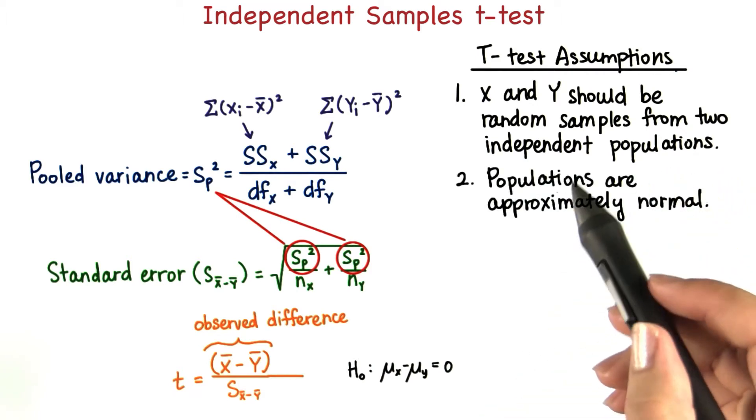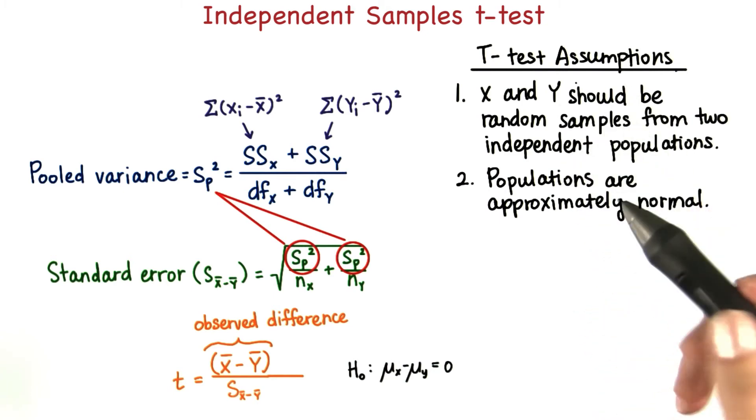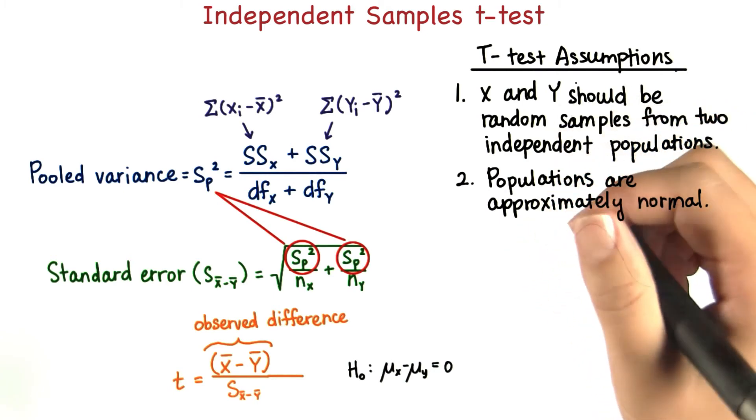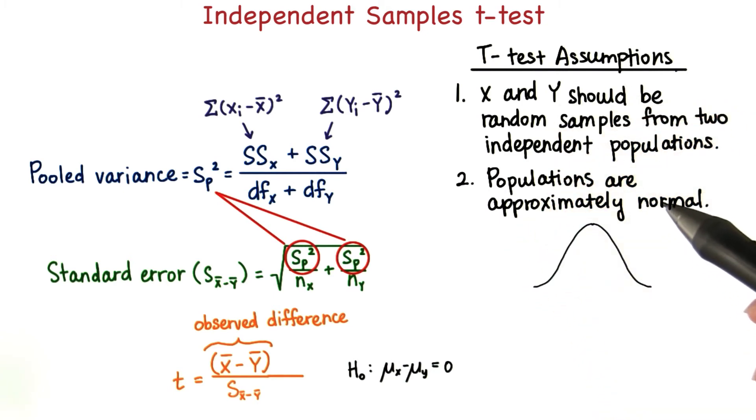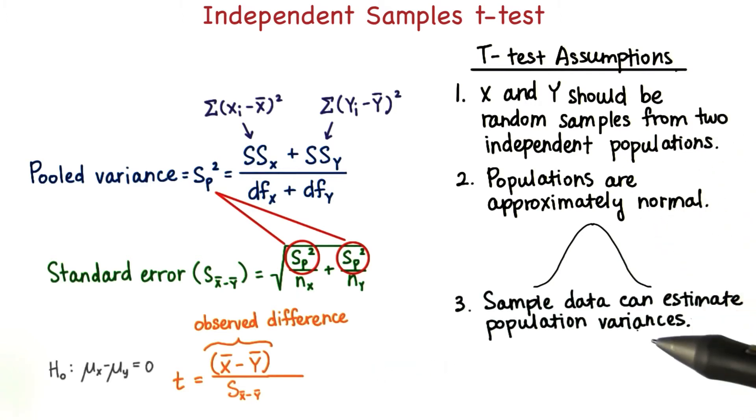The second is that the populations that x and y come from should be approximately normal. This is less important when the sample sizes are very large, greater than 30. A third assumption is that the sample data can be used to estimate the population variances.